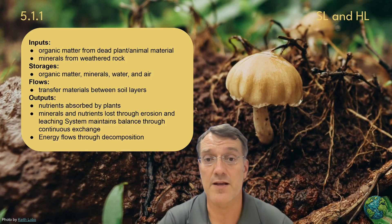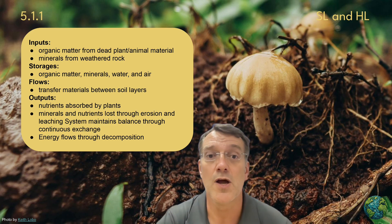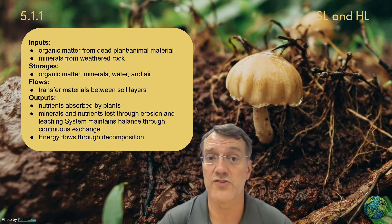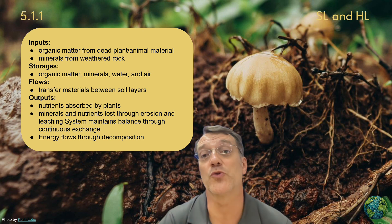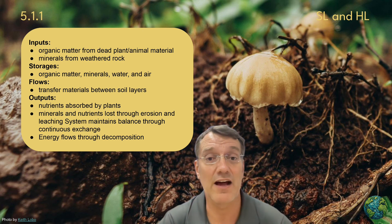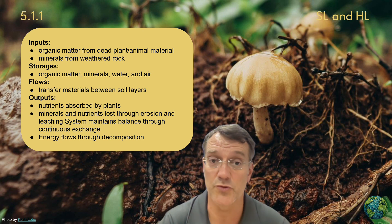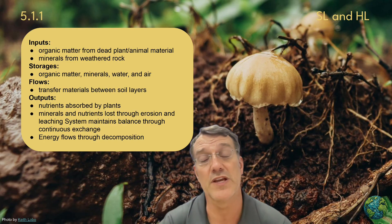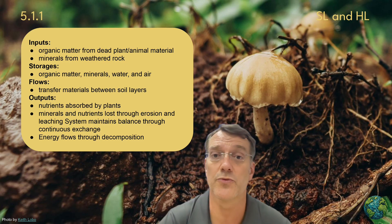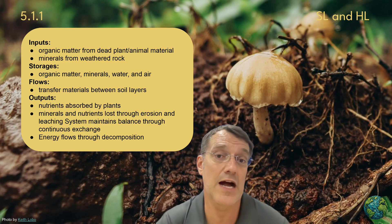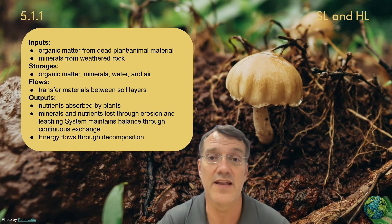Inputs include organic matter from dead plant and animal material, plus minerals from weathered rock. These materials get stored in the soil as organic matter, minerals, water, and air. Flows transfer materials between different soil layers, while outputs include nutrients that plants absorb and minerals lost through erosion and leaching. Energy continuously flows through the system as decomposition occurs, maintaining the system's balance through ongoing exchanges.